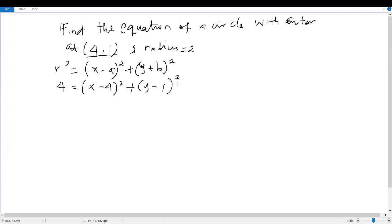So we have to open the brackets so that we can simplify the equation. When we open the brackets, (x - 4)² is going to be x²...